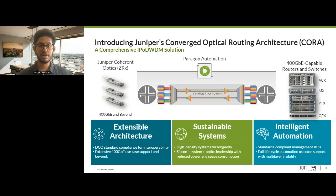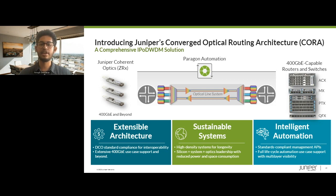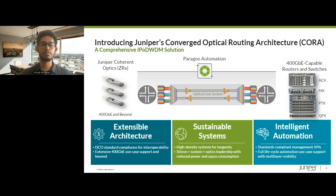When Juniper set out to define our Converged Optical Routing architecture solution, we placed special emphasis on addressing key operational pain points by delivering against three pillars critical to the success of an IP over DWDM transformation. The first is extensible architectures, which starts from standardization and enabling seamless interoperable deployments in multi-vendor networks — whether that be the optical specification, the form factor, or the host interface. Standards are absolutely key, especially as the coherent pluggable ecosystem continues to grow.